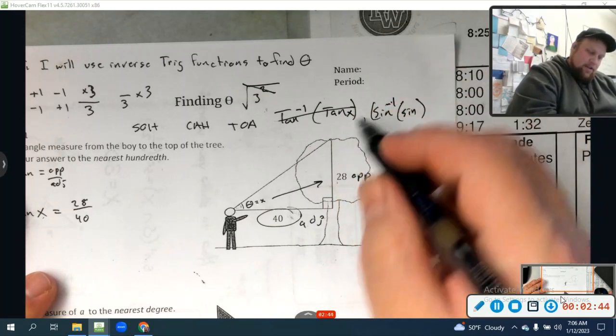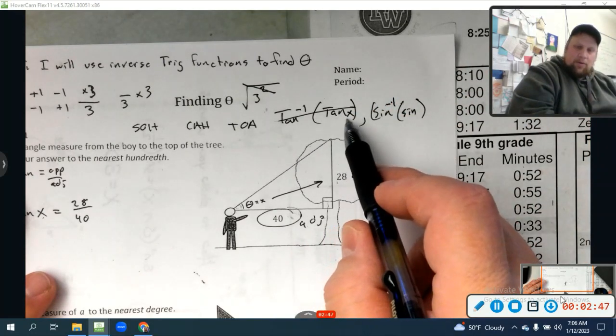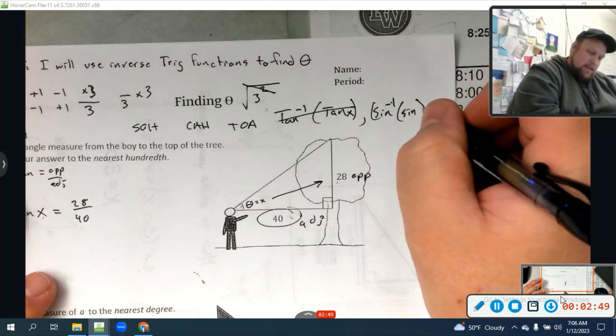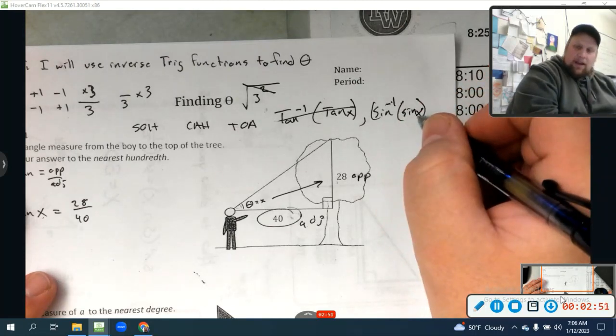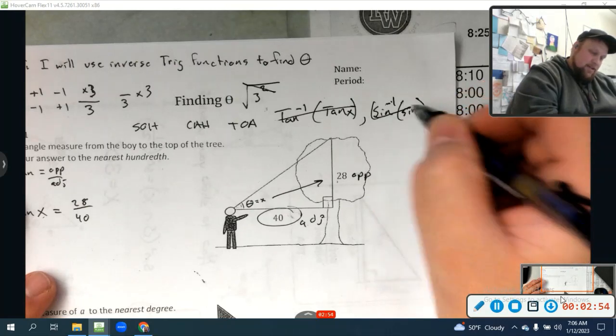So if I'm taking the tangent of x, the inverse tangent of that will just leave me with x. If I'm taking the sine of x, the inverse sine of that sine will just leave me with x. Cancels out.